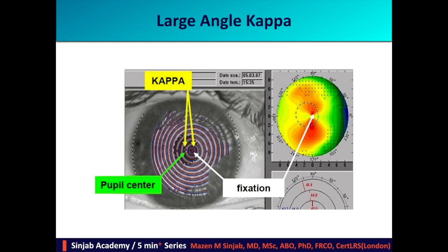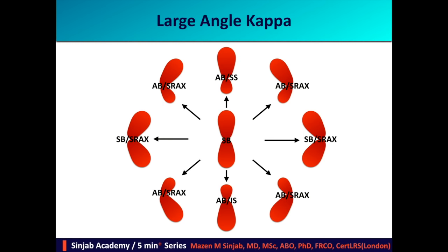Large angle kappa — this is an example of a symmetric bow tie, vertically oriented, representing with-the-rule astigmatism. If the x component of the pupil center, or angle kappa, is very large horizontally, then based on whether it is negative or positive, we will have skewed radial axis. If the y component of angle kappa is larger than normal, we will have either asymmetric bow tie superior steep or asymmetric bow tie inferior steep. If both x and y are out of the normal range, this will be complicated by skewed radial axis.